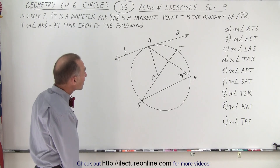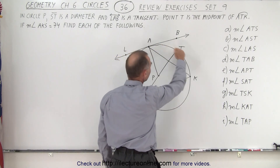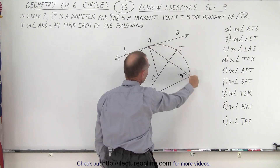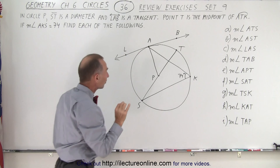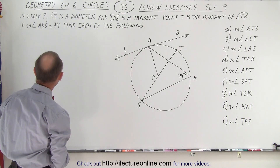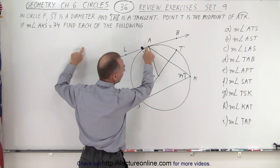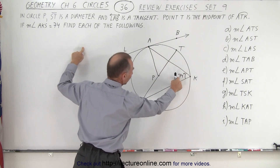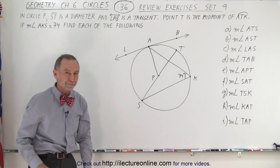The point T is the midpoint of the arc between A and K, so T represents the exact midpoint between these two — that is key to understanding what's going on here. And they tell us that the measure of angle AKS, from A to K to S, is given to us as 74 degrees. Find each of the following.